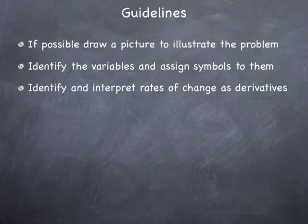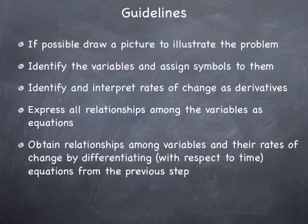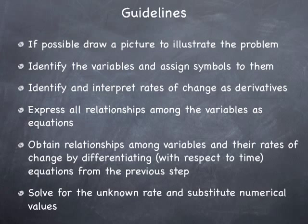Then we want to express relationships among these variables as equations. In the previous case, the equation was that the area is pi multiplied by the radius squared for a disk of radius R. What we're interested in is finding the rate of change of one variable as a function of other known rates of change. To do that, we differentiate the equation or equations found at the previous step with respect to time. Then we solve for the unknown rate and substitute the numerical values to obtain the value of the rate we're looking for.